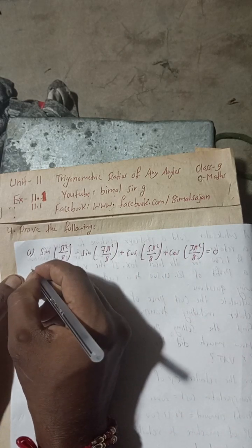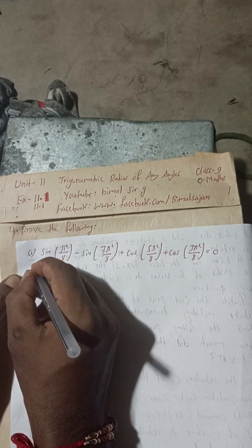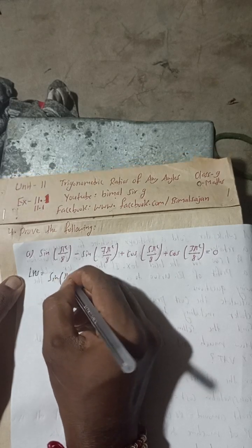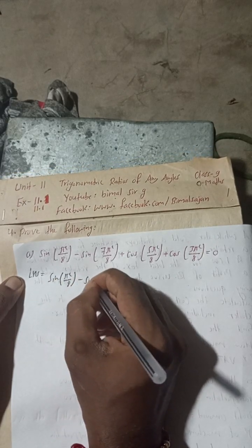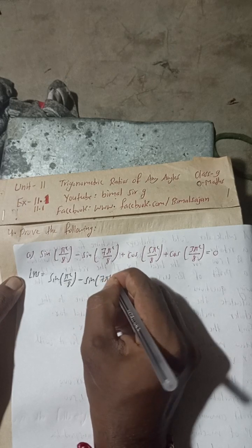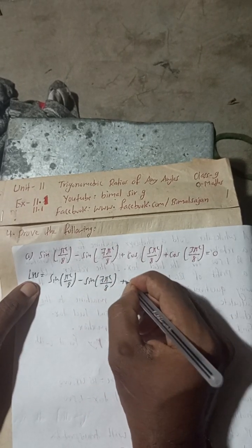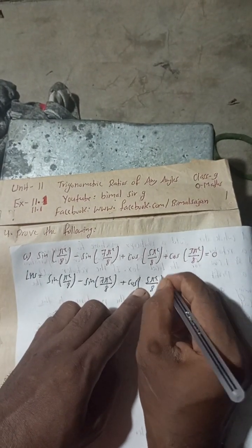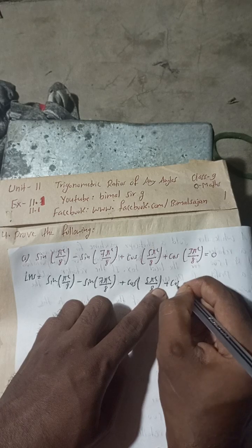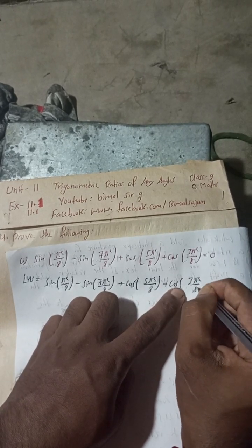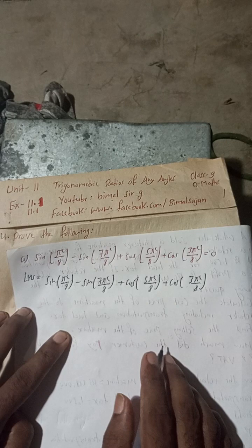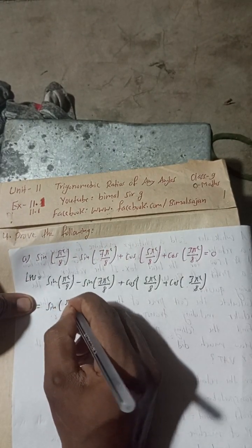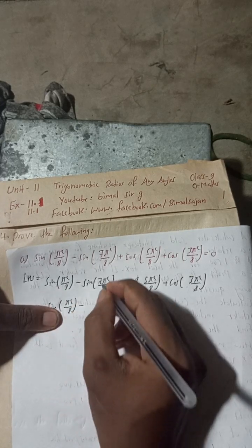Since this is equal to 0, I will take the LHS. The LHS is: sin(π/8) − sin(7π/8) + cos(5π/8) + cos(3π/8). This is our LHS part.